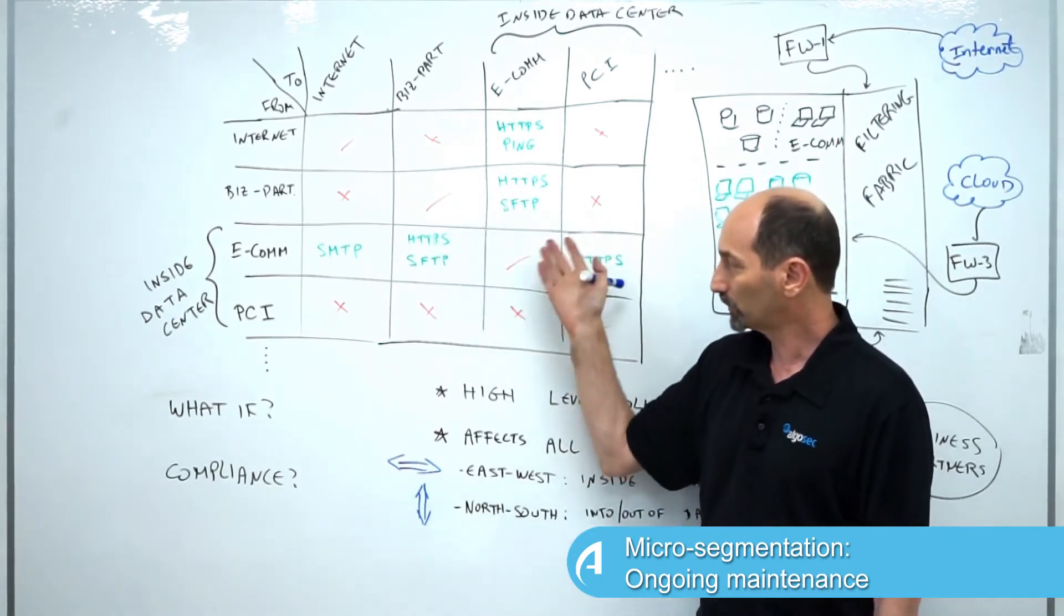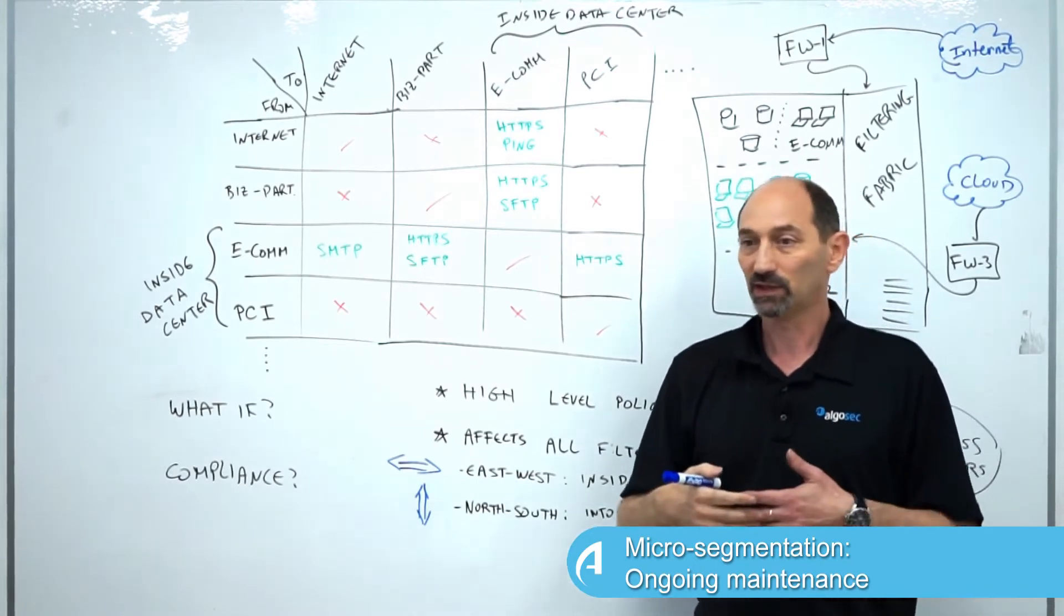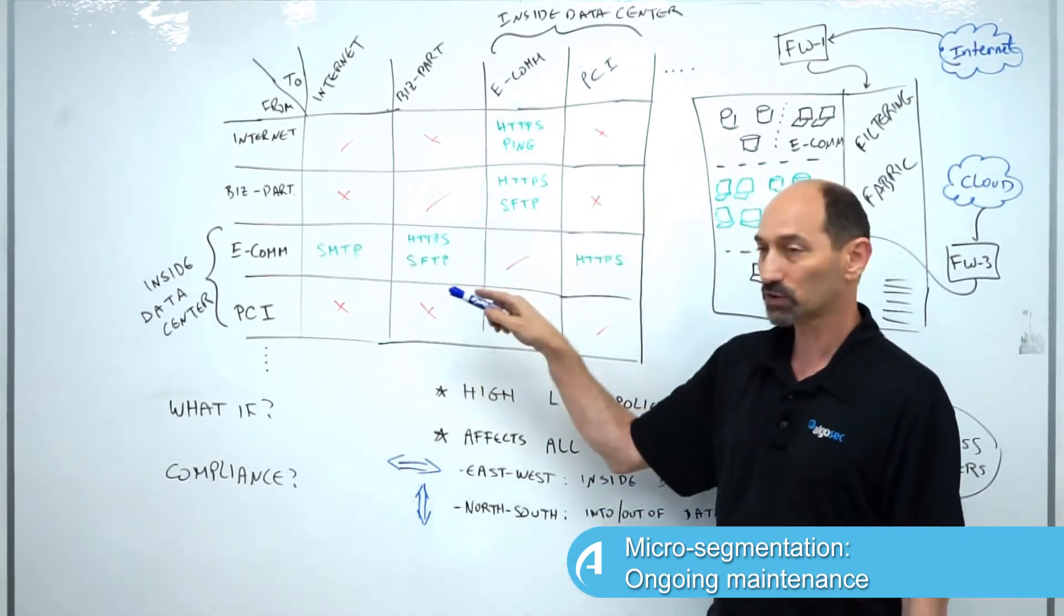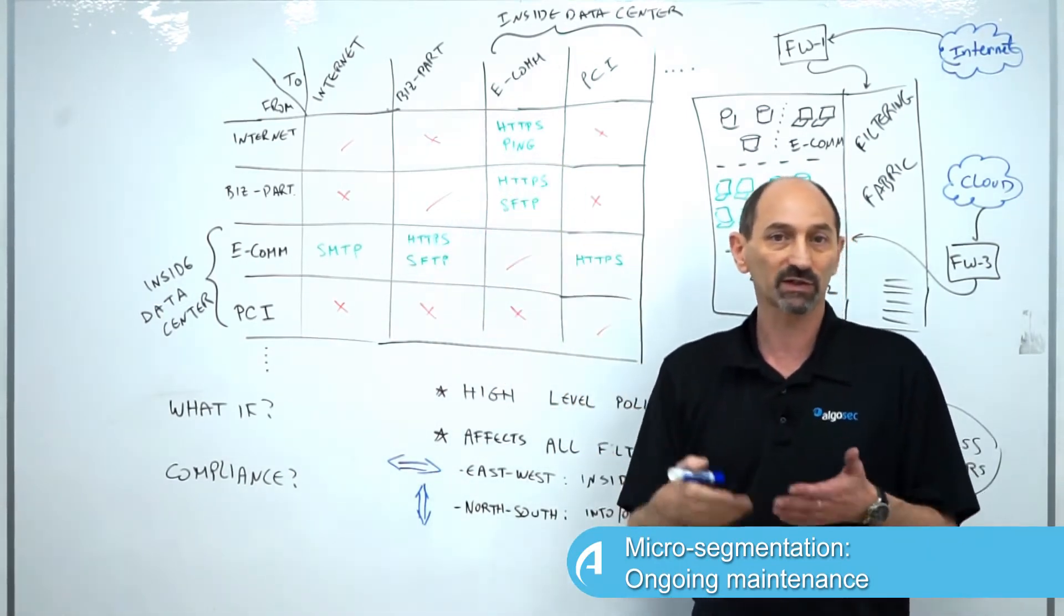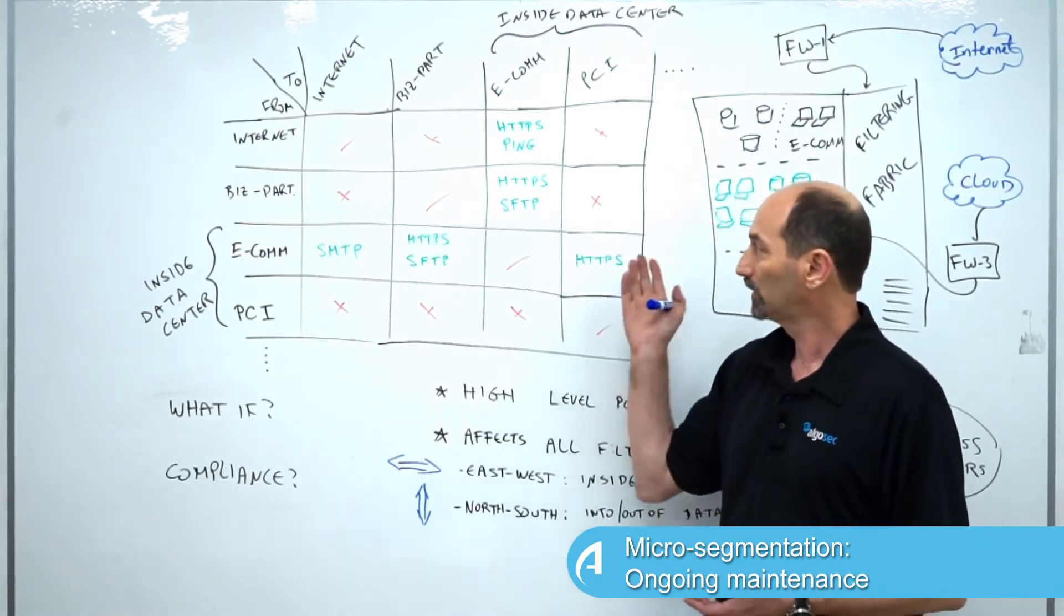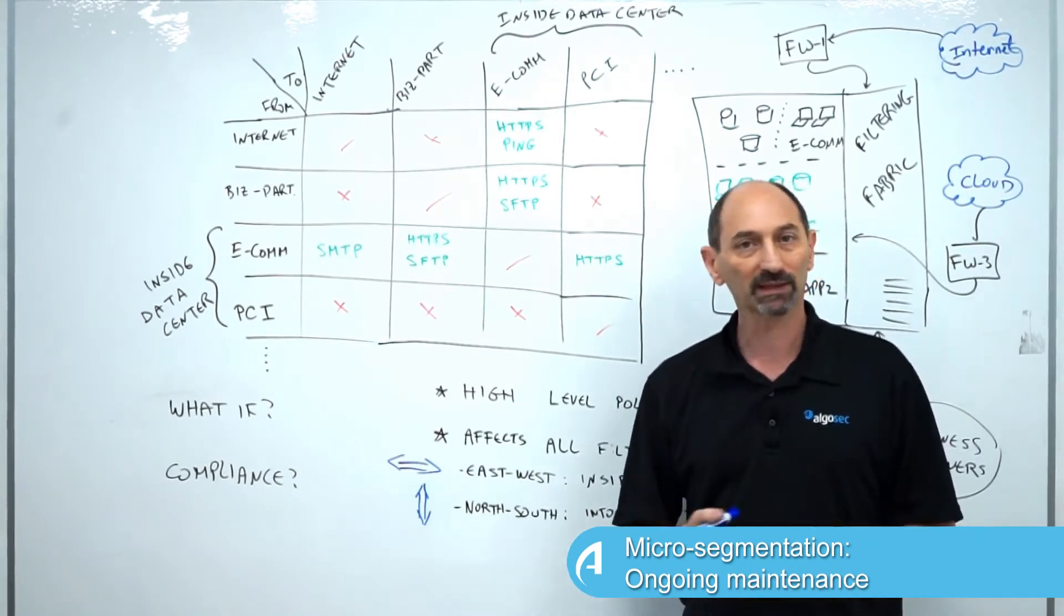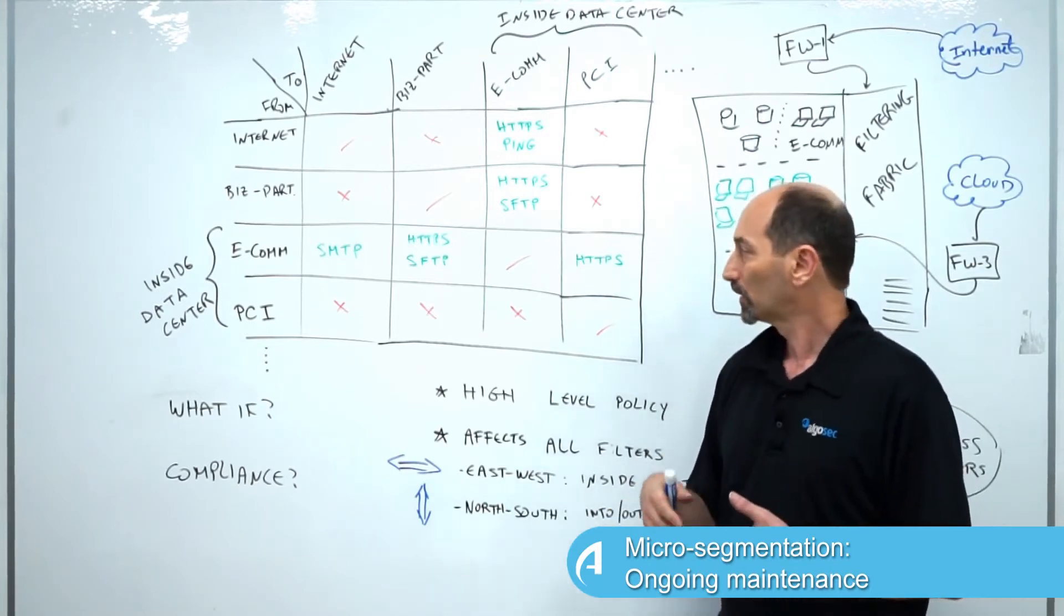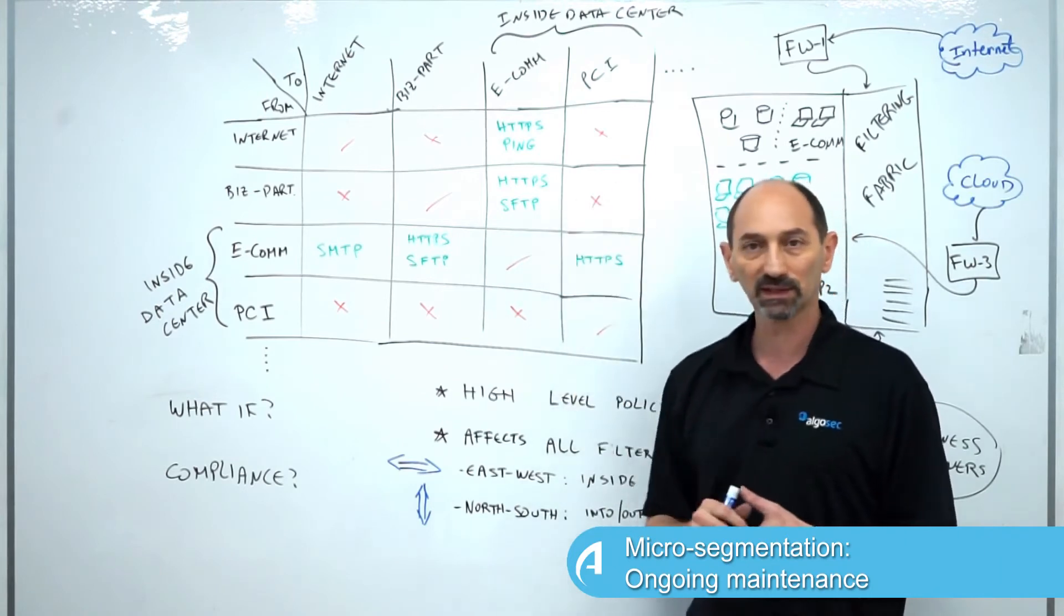The way the information security team uses this is whenever they need to evaluate a change request, they check whether the intersection of the from and to, if the services listed there match the services that are being requested. If they're matching, then the change request is allowed and maybe even automatically using some kind of zero-touch workflow without any human in the loop.